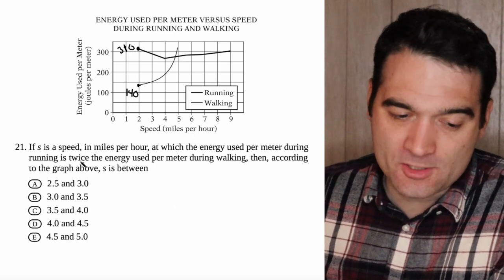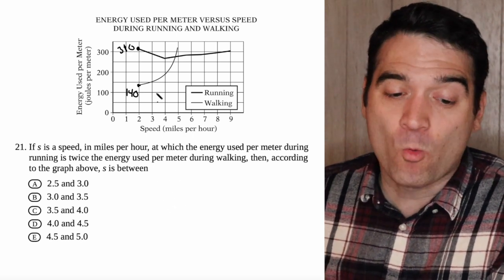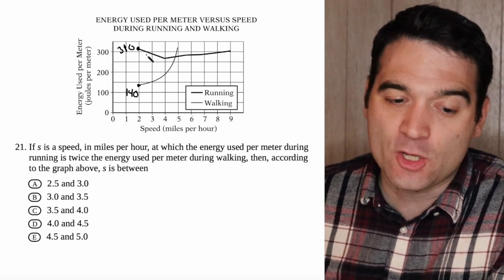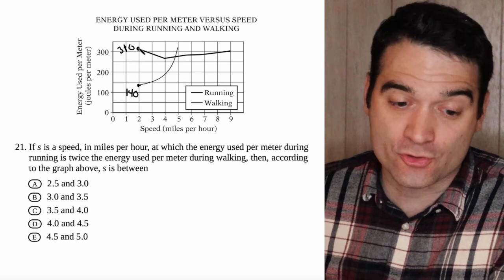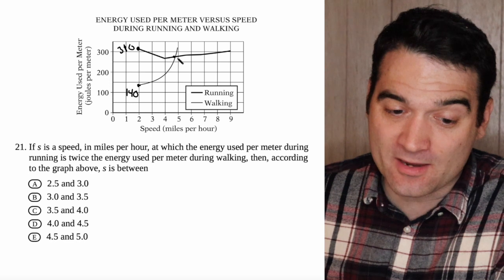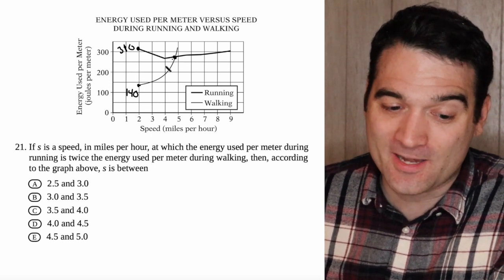So what this question wants to know is at what point, at what speed, is the black line, the bold line, the running line, two times larger than the thin line? Clearly, they're the same here, so it must happen at some point between here and here.